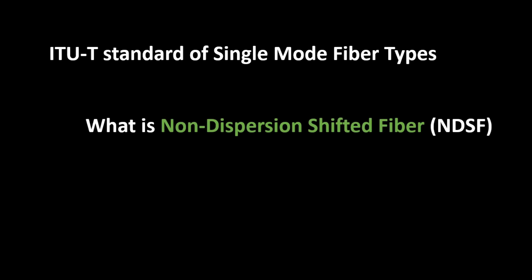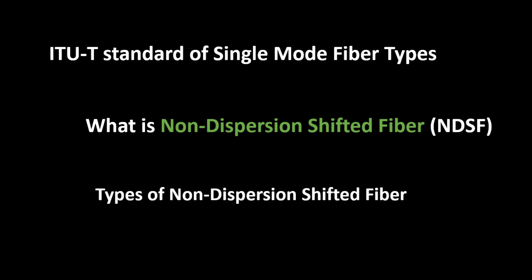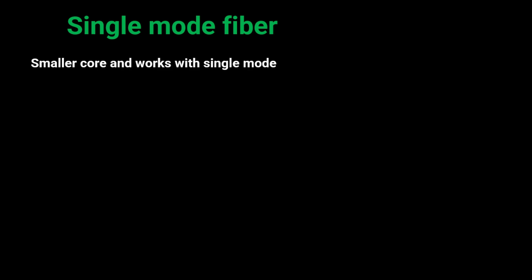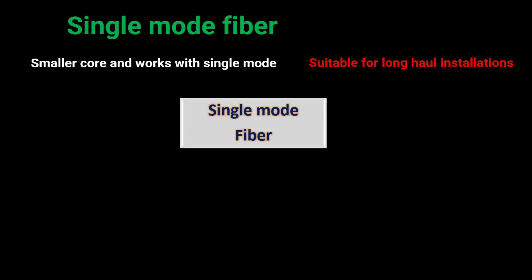Here we'll cover the ITU-T standard of single mode fiber types, what is non-dispersion shifted fiber and types of non-dispersion shifted fiber. Single mode fiber has a small core around 8 to 10 micrometers, so light can travel in a single mode. Due to that, it is suitable for long-haul transmission. Single mode fiber has several types defined in standards.